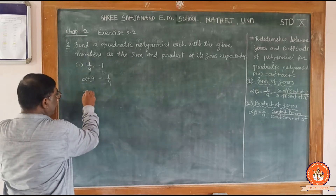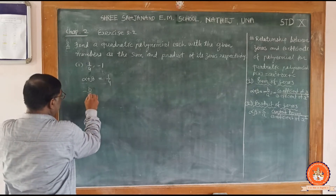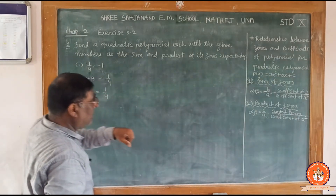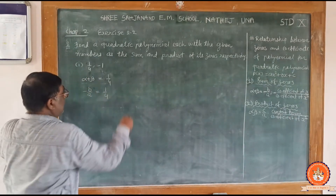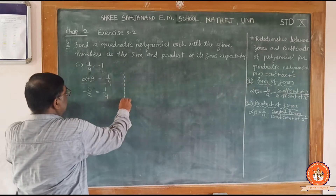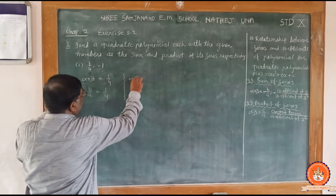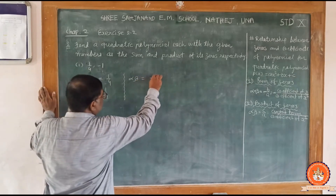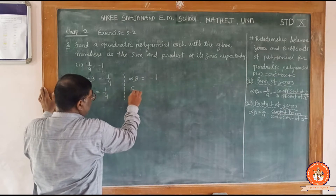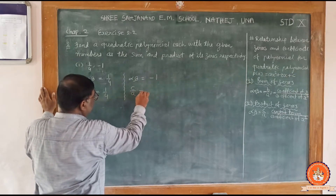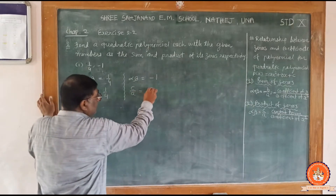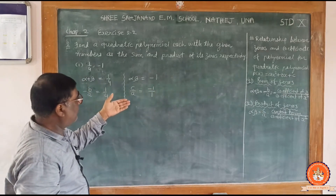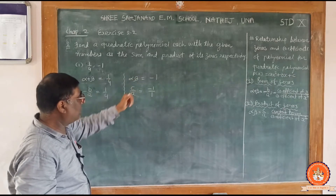Alpha plus beta, using the formula minus b upon a, is equal to 1 by 4. So minus b upon a equals 1 by 4. Alpha into beta, which is c upon a, equals minus 1, written as minus 1 upon 1 in numerator-denominator form.